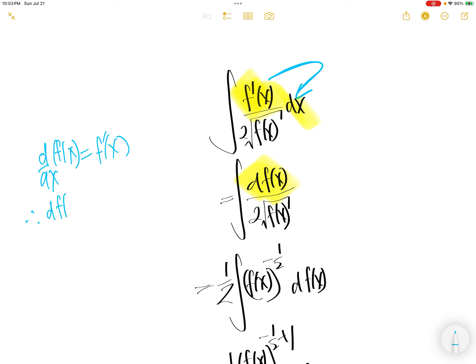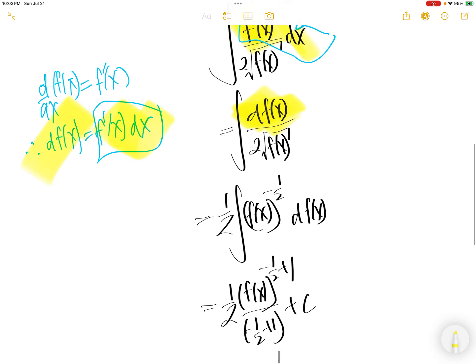Therefore, d of f of x is equal to f prime of x dx. This piece here is this. What we did was we are going to replace this with that over here.